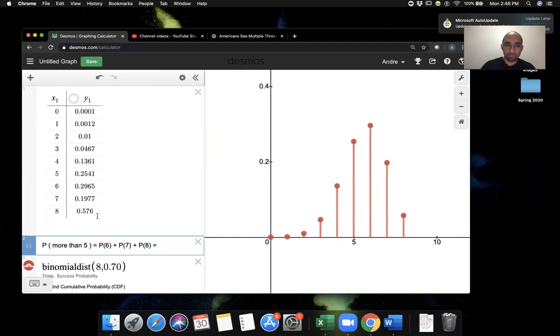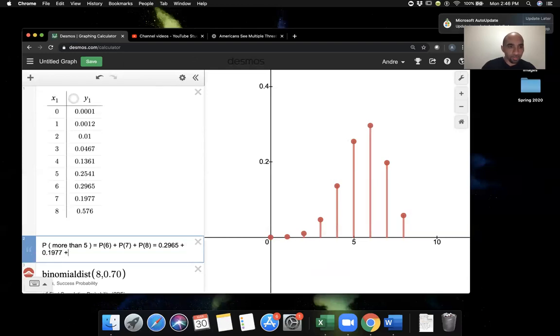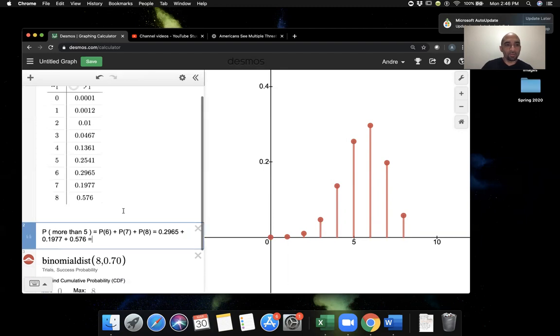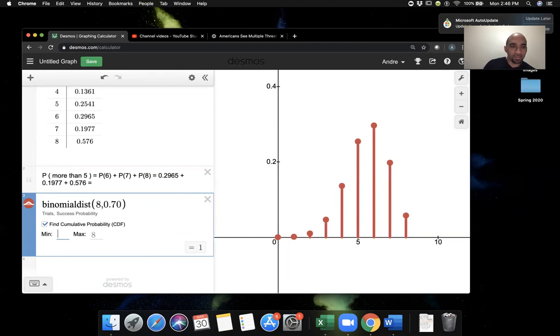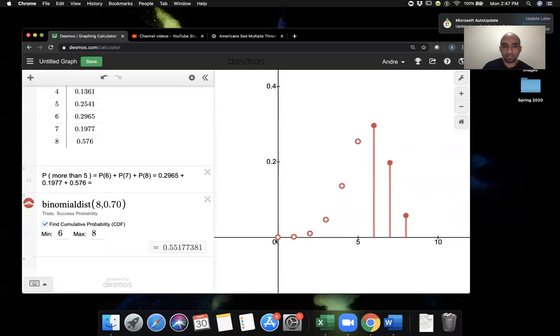And we can then add up these three probabilities, 0.2965, plus 0.1977, plus 0.0576. And that's going to give us our result. We can do this directly in using Desmos, because if we click on this, what we already did, we already clicked on the find cumulative probability function. I'm going to set my min to six and my max to eight.